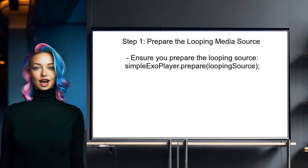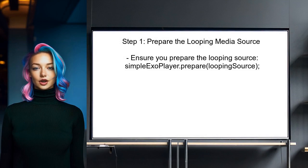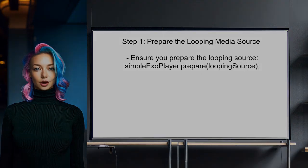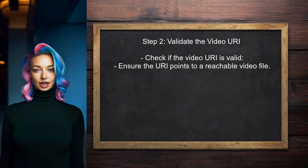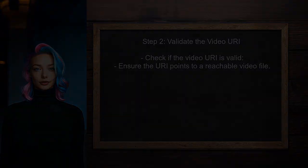First, the user should ensure they are preparing the looping media source correctly. Instead of preparing the original media source, they need to prepare the looping source. Next, the user should check if the video URI is valid. An invalid URI could prevent the video from looping as expected.